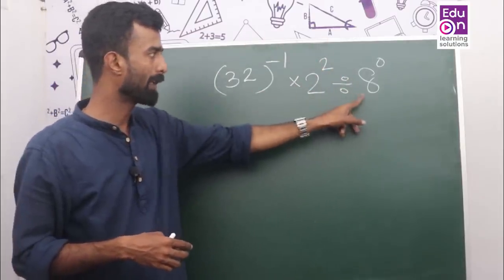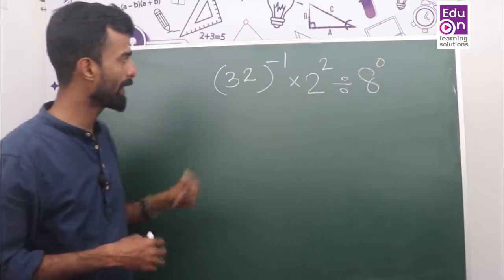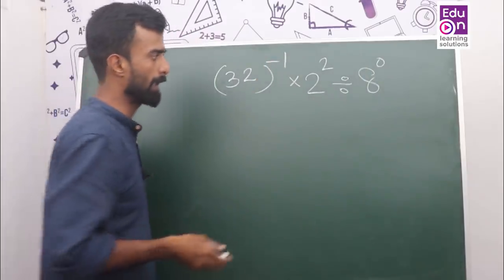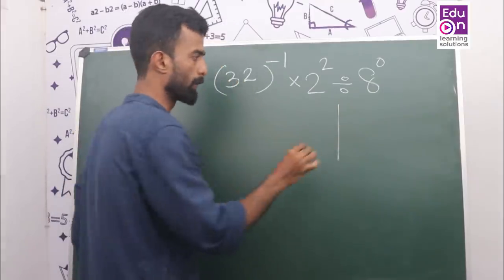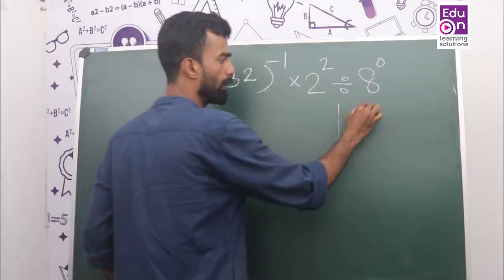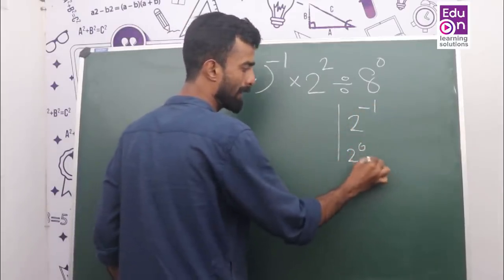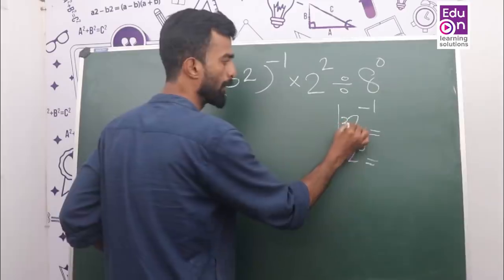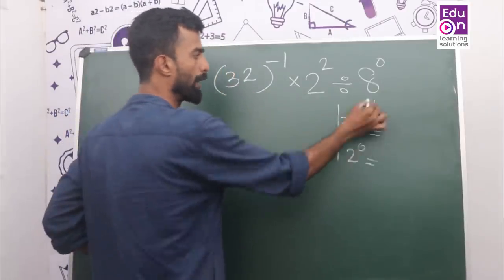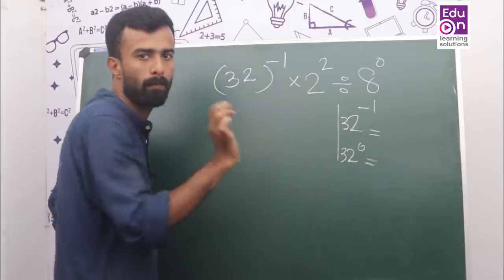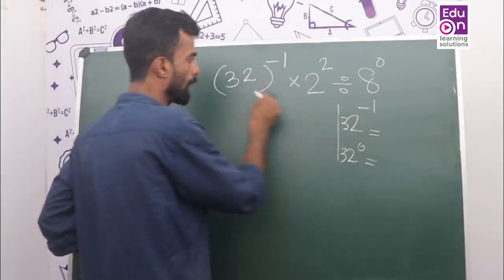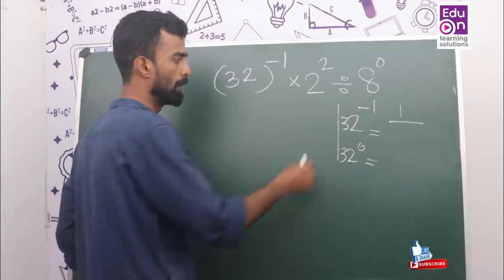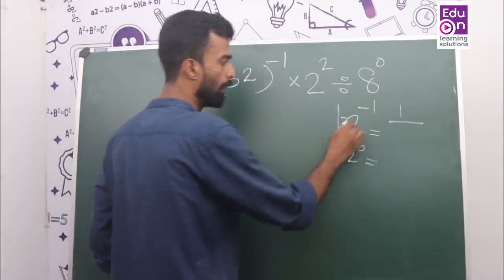12 divided by 8 raised to 0 — we will learn two things. One: a number raised to minus 1. Two: a number raised to 0. For example, 2 raised to minus 1 and 2 raised to 0. Take 32 — 32 raised to minus 1 equals 1 by 32.